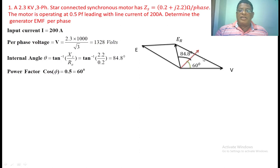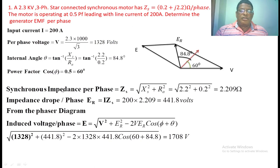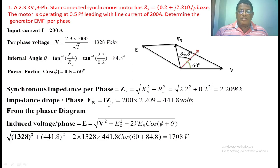We should know the length of V as well as ER. ER equal to the synchronous impedance per phase: Zs equal to square root of Xs squared plus Ra squared, giving the value 2.209. ER equal to I into Zs, the resultant voltage, which is equal to 441.8 volts.